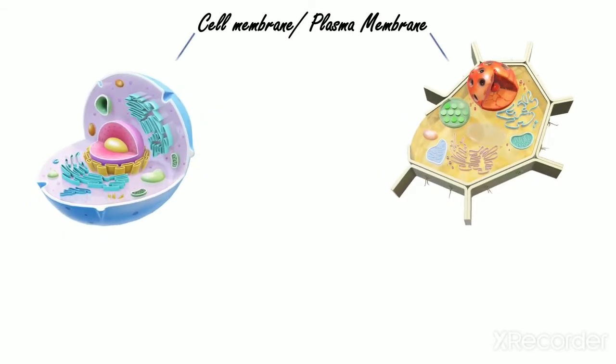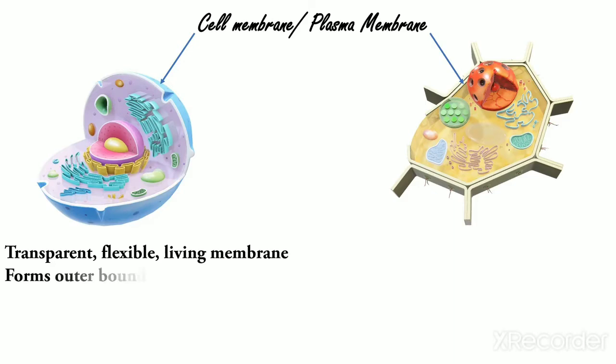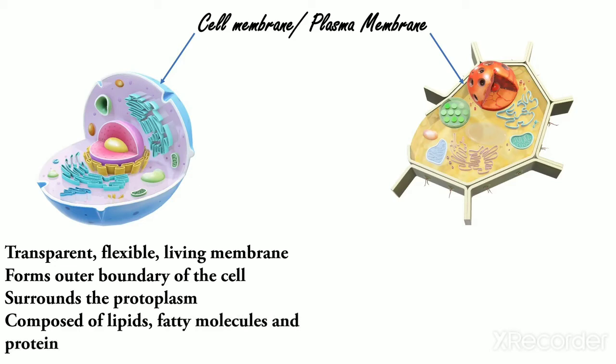Number one. Cell membrane or plasma membrane. It is the thin transparent flexible living membrane which forms the outer boundary of the cell. It surrounds the protoplasm. Cytoplasm and nucleus together constitute the protoplasm. And it is composed of lipid, fatty molecules, and protein.